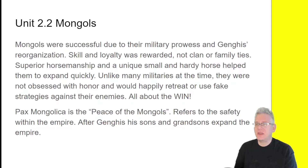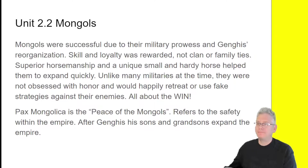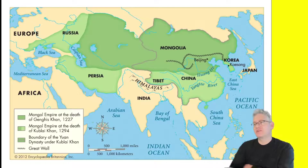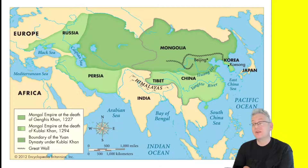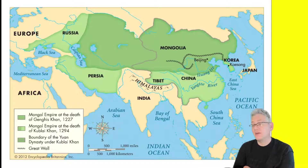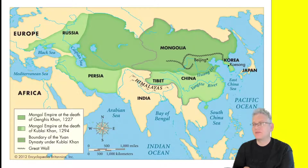Once they had done a lot of conquests, there was the Pax Mongolica, or the Peace of the Mongols, which refers to the safety within the empire. After Genghis, his sons and grandsons expanded that empire further. The dark green on the map is the empire at the death of Genghis Khan in 1227. By the death of Kublai Khan in 1294, Persia, Russia, and China had all been added. The Mongols conquered Song China, Persia, and large parts of Russia. Over time the empire fragmented, and Kublai Khan — the fourth of the Great Khans — became the leader of the Yuan Dynasty, the dynasty of China.